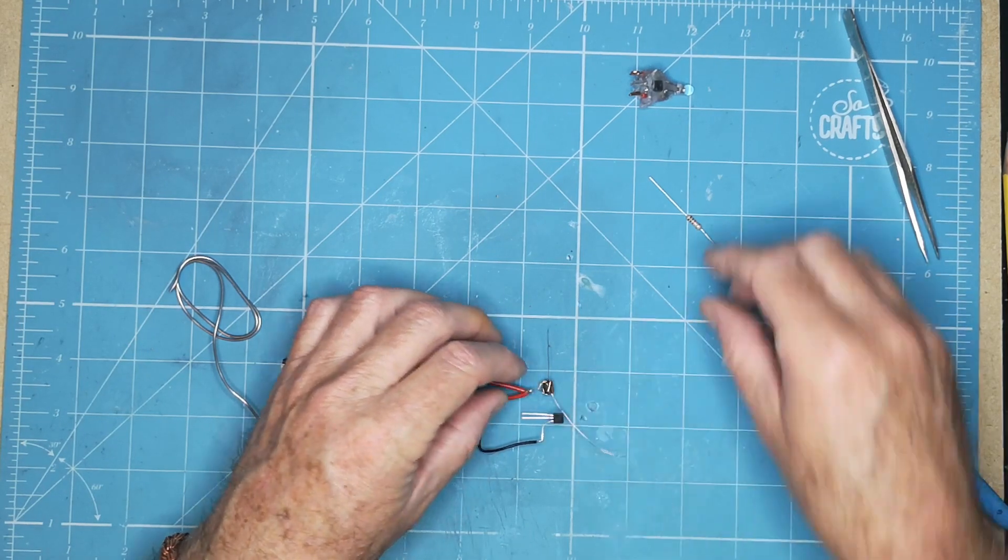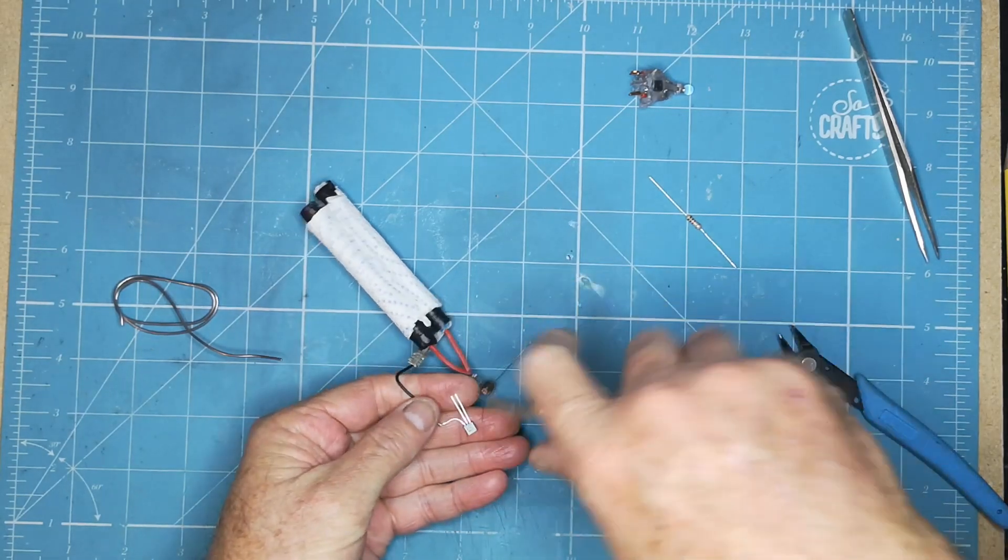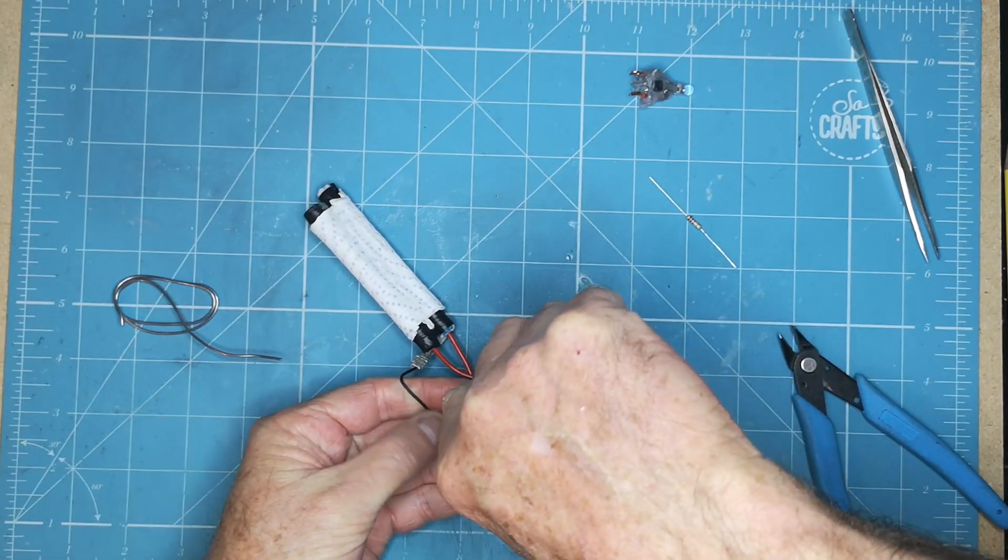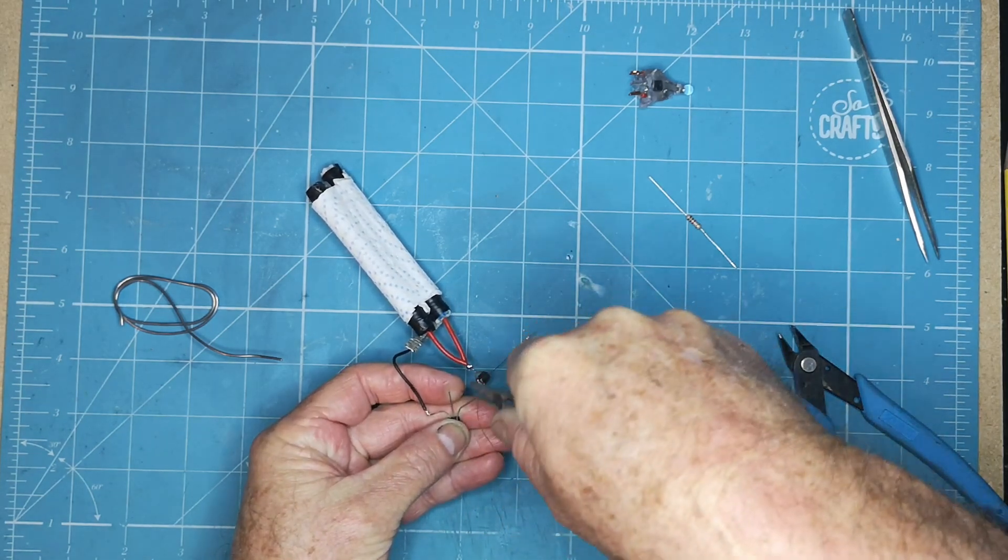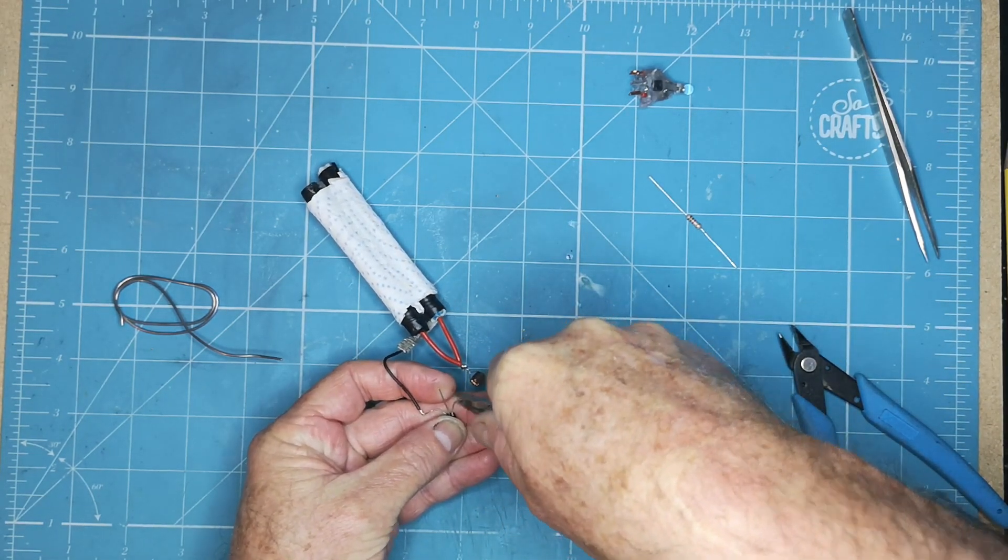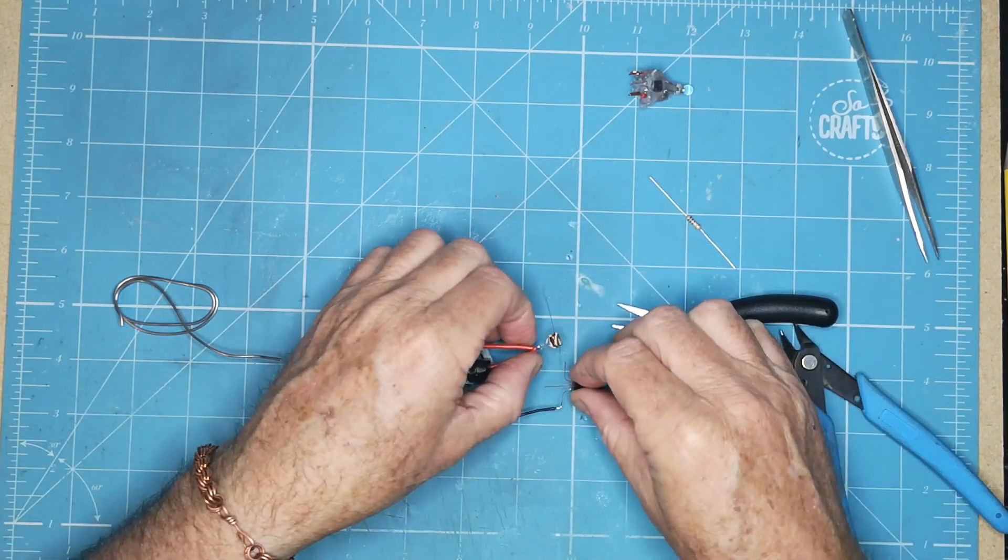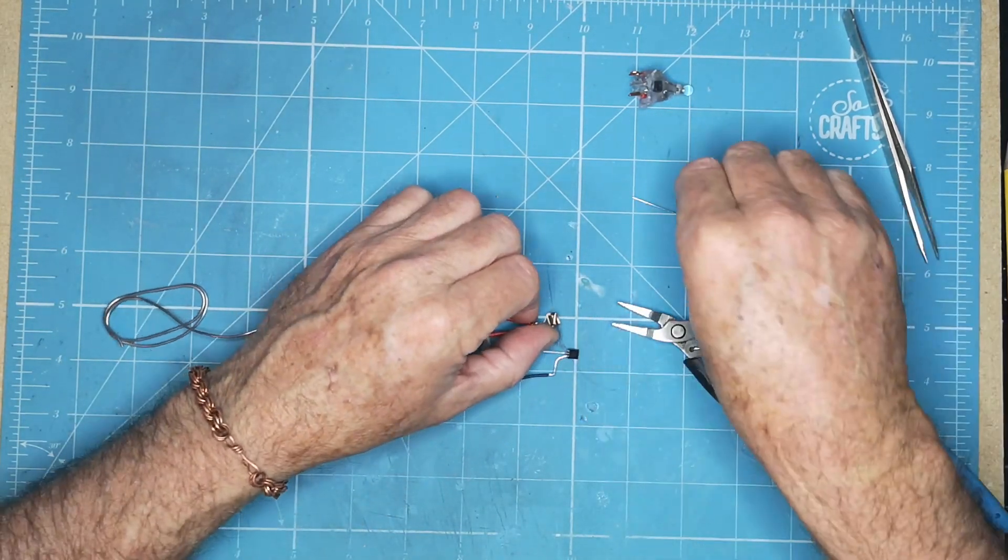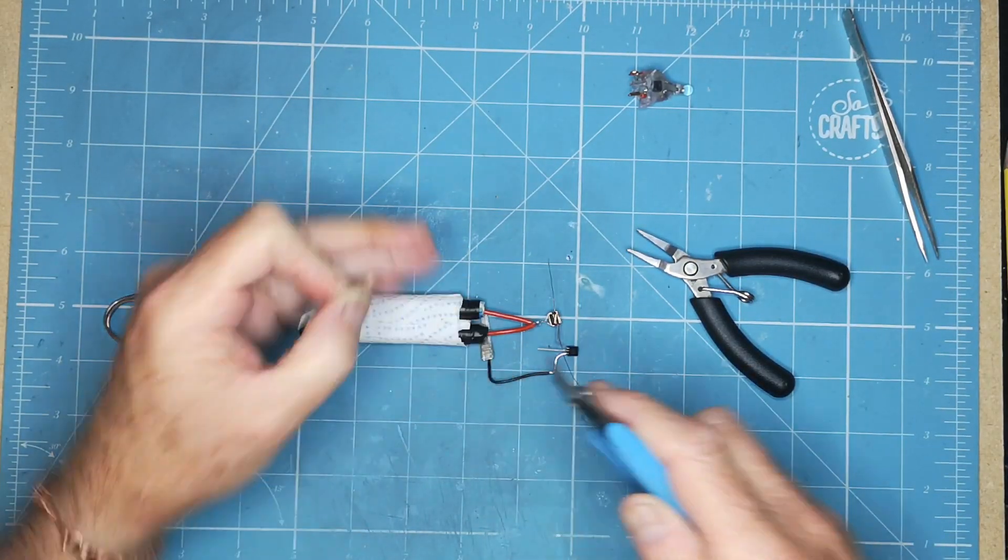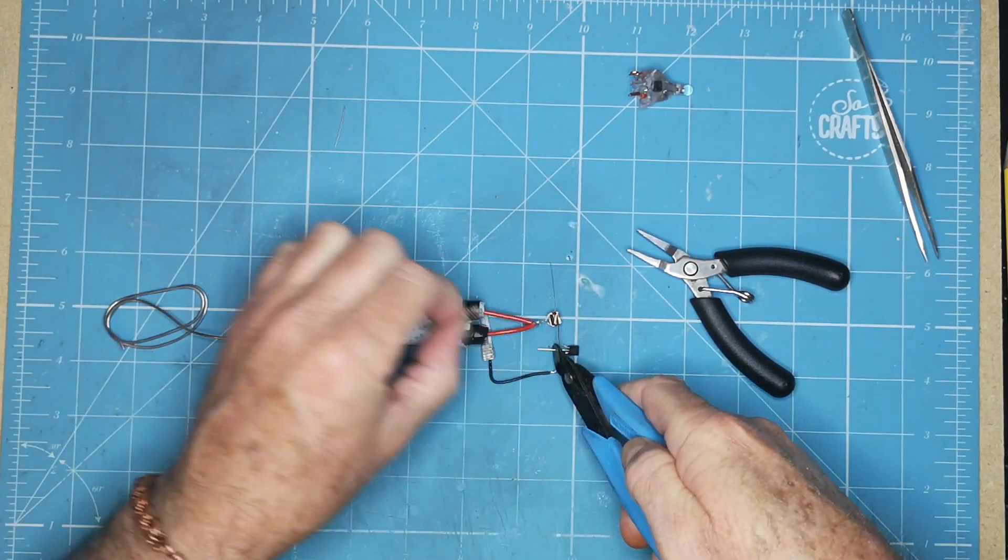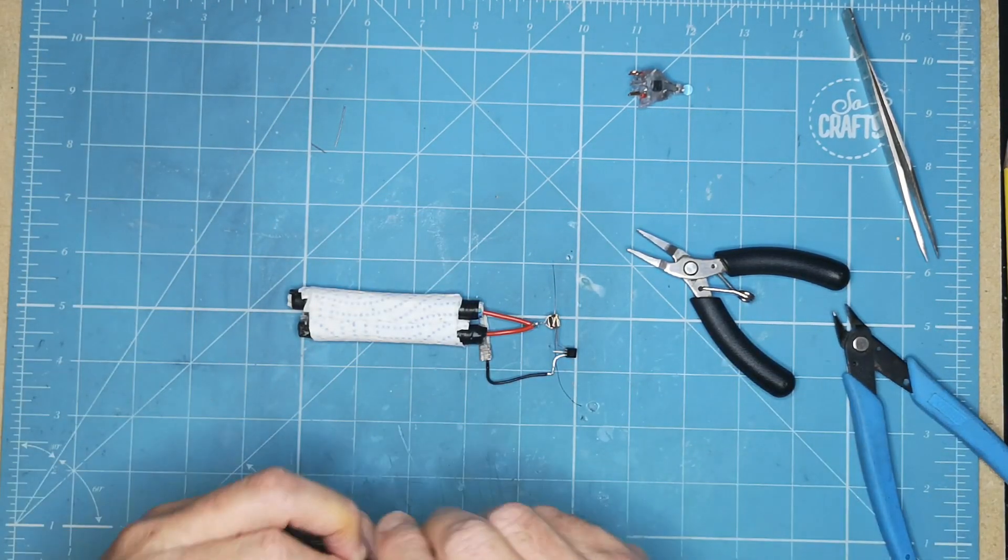So now we know our base has got to have a 1k resistor on it so we will bend this one a little bit like that. We don't need that just yet. Now our base needs the resistor on it so let's trim that down. Trim that down.